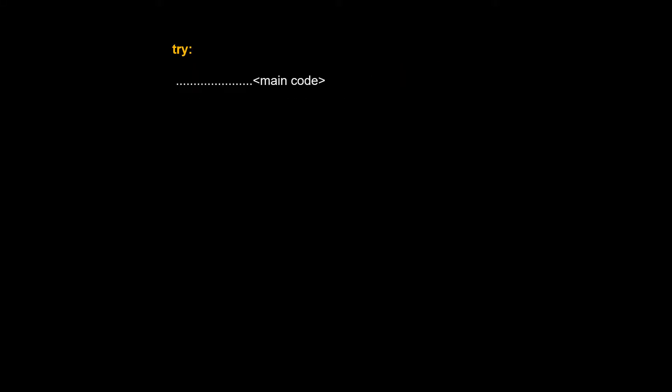You start with the keyword try, put a colon, press enter, give some indentation, and write the main code. Then, if there are any exceptions you feel may occur, you put them under the except clause — the keyword except, then name the exception. There are various standard exceptions we will cover soon. So: except Exception1: and write the statement you want to execute when that exception is caught.